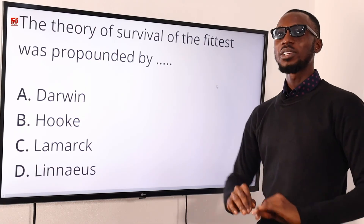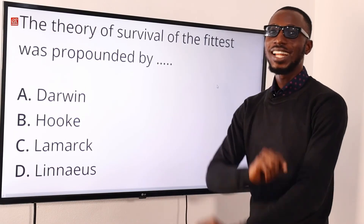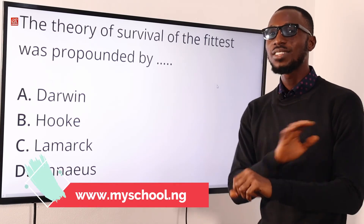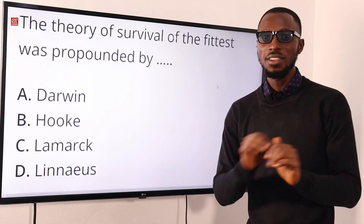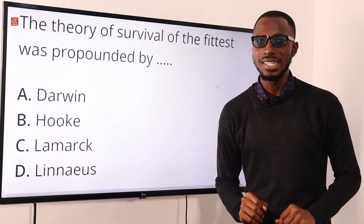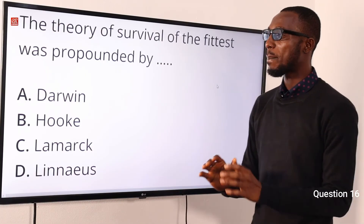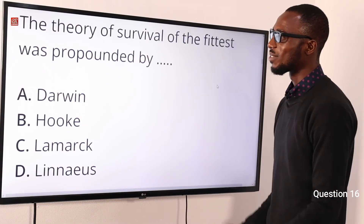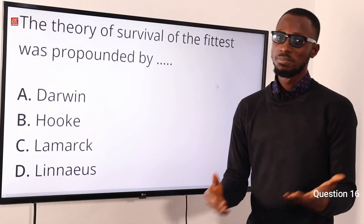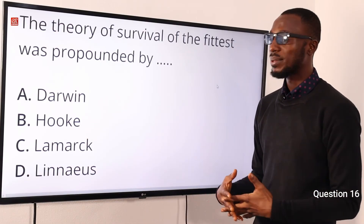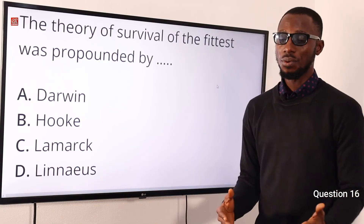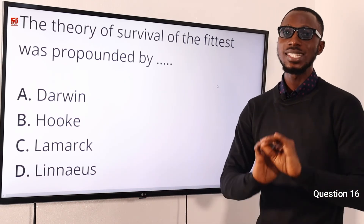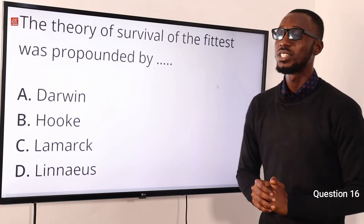Do not forget that you can ask questions right now — click on the link in the description below and you'll be taken to the MySchool website where you can meet our solution providers, ask those questions, and they'll give you the solutions you need. Question 16: The theory of survival of the fittest was propounded by Charles Darwin, who also talked about natural selection. Robert Hooke is associated with elasticity and the cell theory. Jean Lamarck — use and disuse. Carl Linnaeus — taxonomy. The correct option is option A for Charles Darwin.